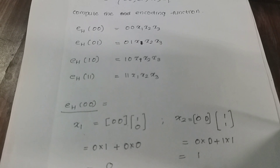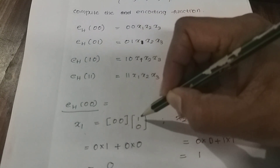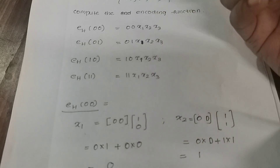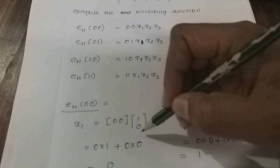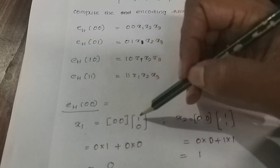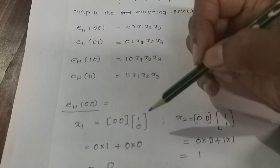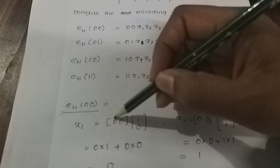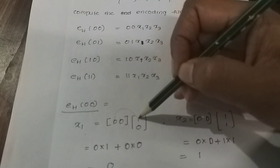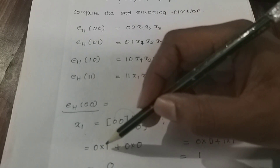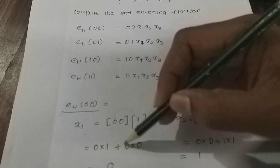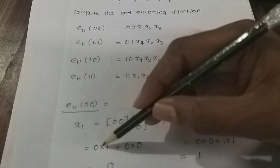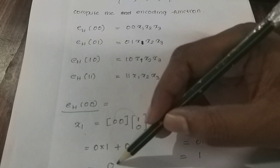Now we write the matrix multiplication. It's not a column operation — it is a matrix multiplication. The first element x1: 0 into 1 plus 0 into 0 plus 0 into 1 equals 0. The answer is 0.